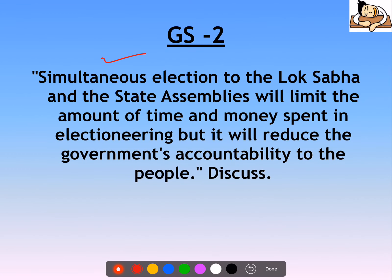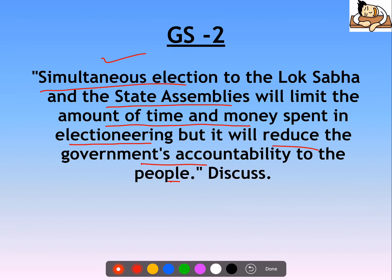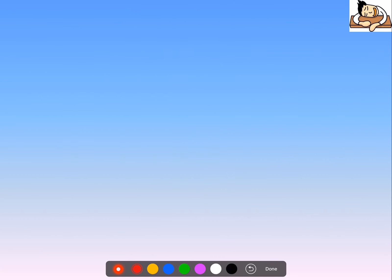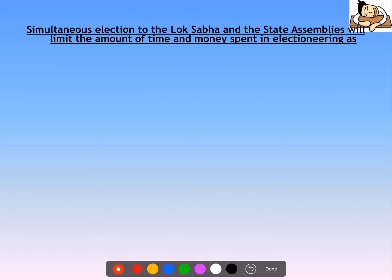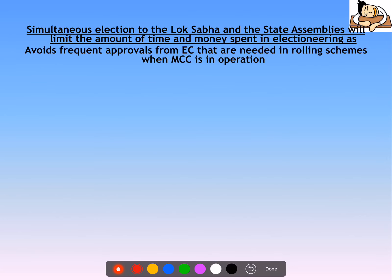Next is the GS2 question on simultaneous elections: holding simultaneous elections to the Lok Sabha and state assemblies will limit the amount of time and money spent on electioneering, but it will reduce the government's accountability to the people. Simultaneous elections is a very important topic. The specific thing to discuss is how this reduces government accountability, though the benefits are also many and should be elaborated.